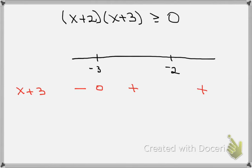Now consider the second factor, x plus 2, which equals 0 at minus 2. Picking minus 2.5 between minus 3 and minus 2: minus 2.5 plus 2 is negative. Picking minus 5 to the left of minus 3: minus 5 plus 2 is minus 3, also negative. So on the left-hand side of minus 2 on the number line, x plus 2 is negative in both regions. Picking a test value to the right of minus 2, say 5: 5 plus 2 is 7, so all values to the right of minus 2 are positive for this factor.